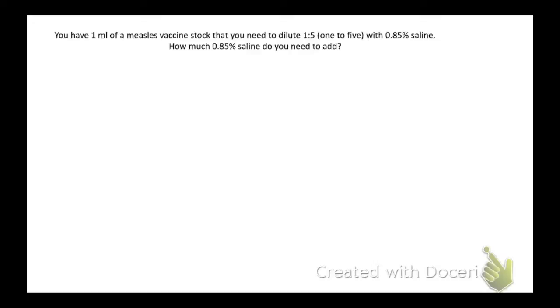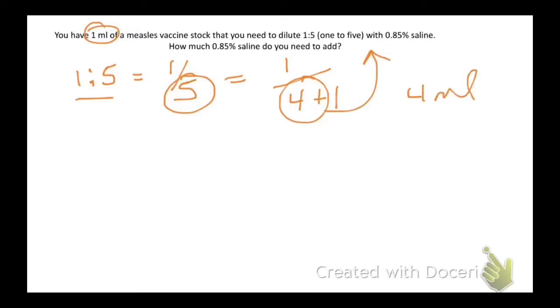Let's look at another dilution problem. You have 1 mil of a measles vaccine that you need to dilute in saline. We look at the 1 to 5 dilution: 1 over 5, and we know that 5 is the total volume, so it's 1 over 4 plus 1. Four came from the difference between 5 and the volume we put in. So 4 mils is how much saline you need.